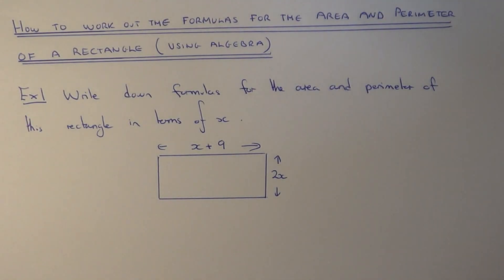Today I want to show you how to work out the area and perimeter of a rectangle when the side lengths are given in terms of x. So let's have an example of one then.